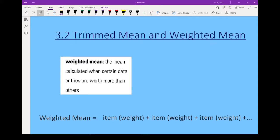Let's take a look at weighted means. Now a weighted mean is a mean that's calculated where some of the data points are worth more than others. The most common place that you're going to come across a weighted mean is when you're looking at marks for a class.